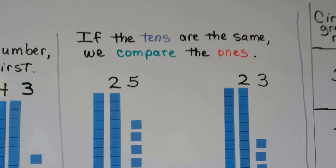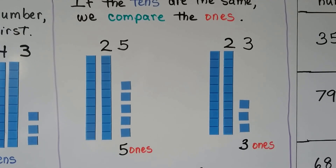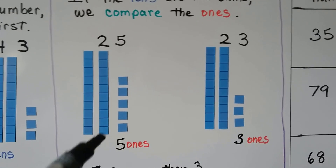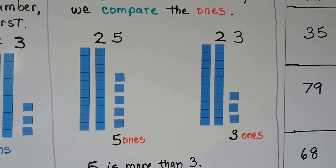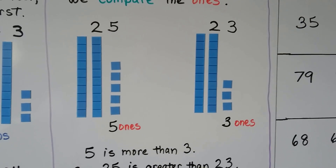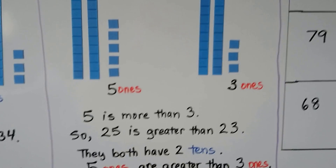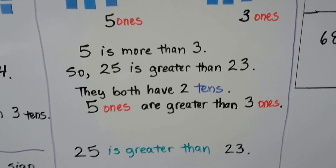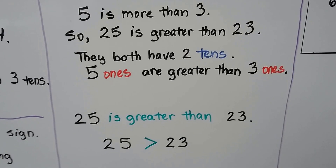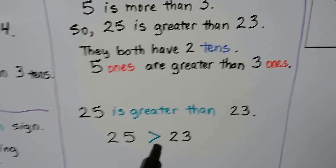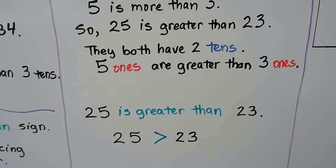If the tens are the same, we compare the ones. Here we have 25 and 23. They both have two tens, but this one has 5 ones and this one has 3 ones. 5 is more than 3, so 25 is greater than 23. They both have two tens — 5 ones are greater than 3 ones. We use the greater than sign, and it's open to the larger number.